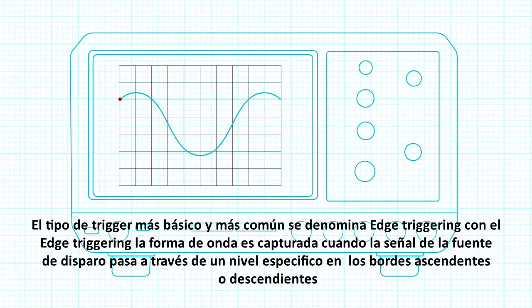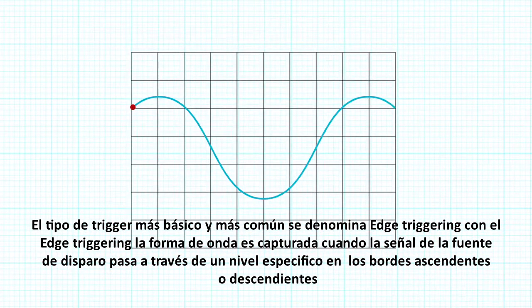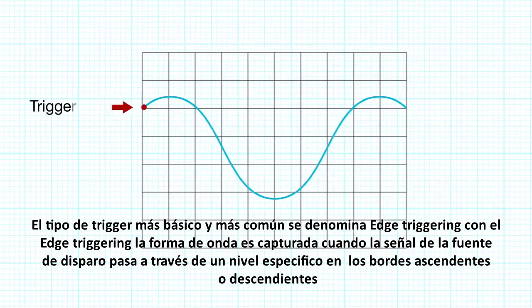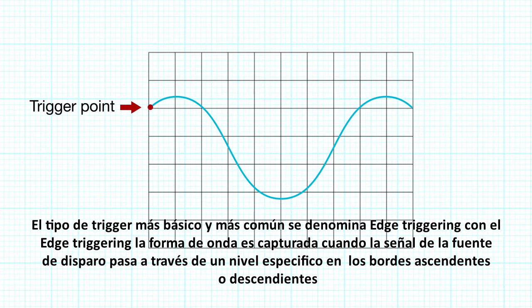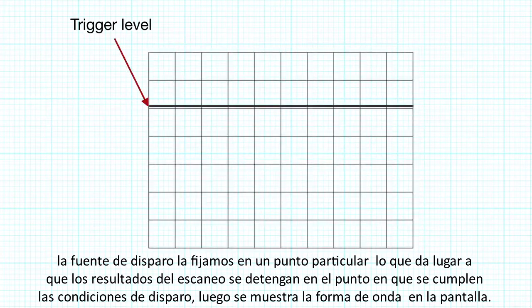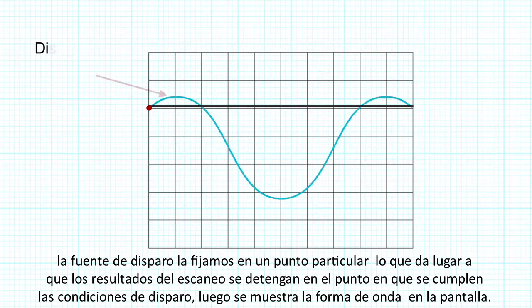The basic and most common type of triggering is called edge triggering. With edge triggering, the waveform is captured when the signal on the trigger source passes through a specific level on the rising or falling edge of the trigger source. We set the trigger point to a particular value, which results in the scan stopping at the point where the trigger conditions are met. Then the waveform is displayed on the screen.